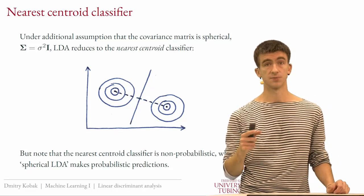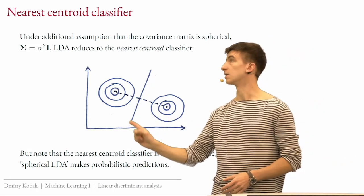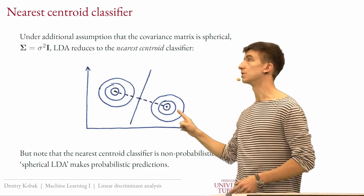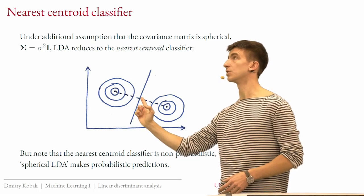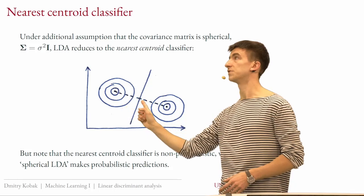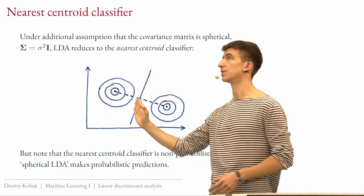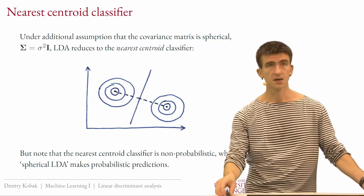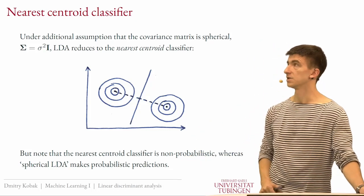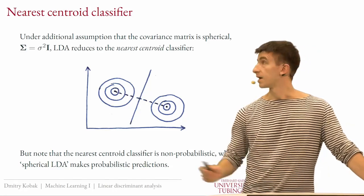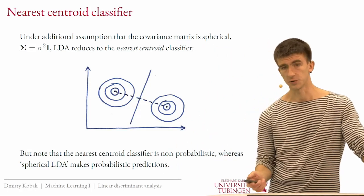This equivalence holds only when the priors are equal. If the priors are different, the boundary is still orthogonal to the centroid line but shifts — it no longer crosses at the midpoint, so it's no longer the nearest centroid classifier. I put 'spherical LDA' in quotes because it's not a standard term, but one could call it that.